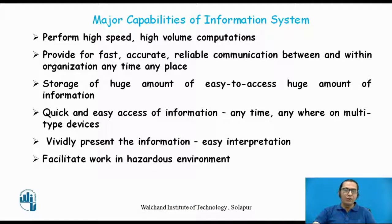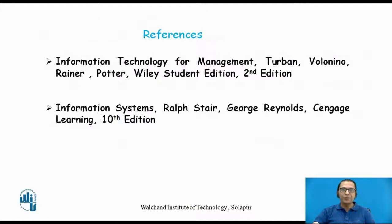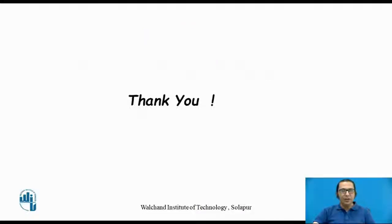Lastly, the information system allows work to be facilitated in a hazardous environment — where it is not possible to deploy a human, we can put the information system there, and it can collect and process data. These are the major capabilities of the information system, and that is why information systems are becoming more and more popular in today's world. We come to the end of this session, in which we discussed the different features and capabilities of the information system. The references include two books: 'Information Technology for Management' by Turban and Volonino, Wiley student edition second edition; and 'Information Systems' by Stair and Reynolds, from Cengage Learning. Thank you, students, for your patience.